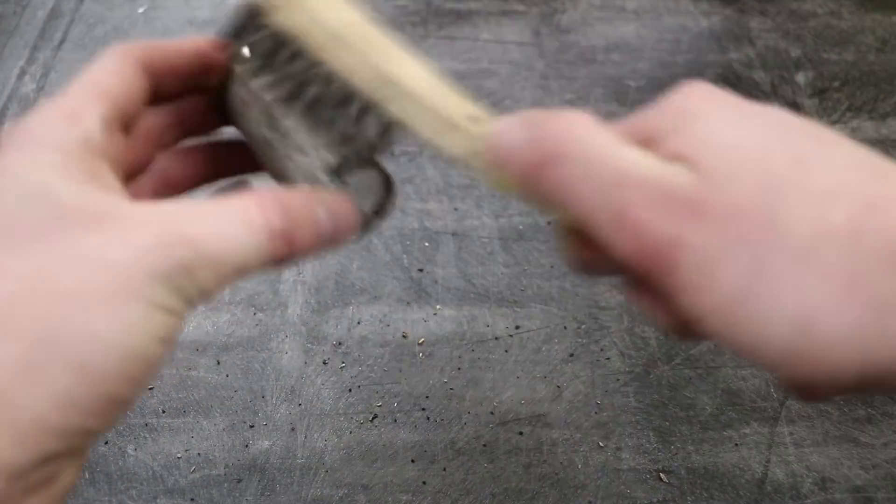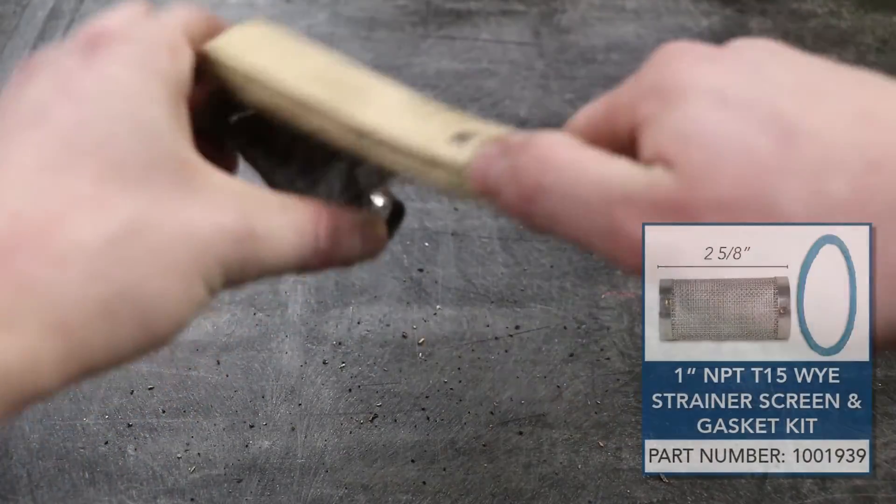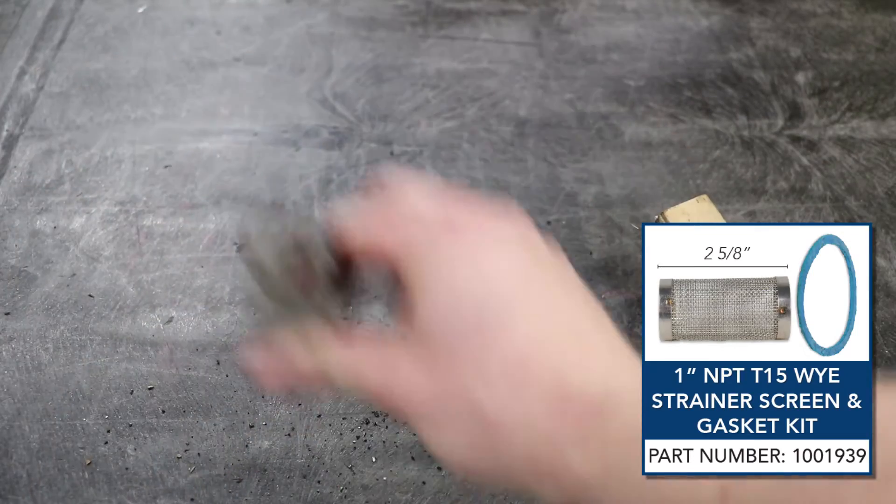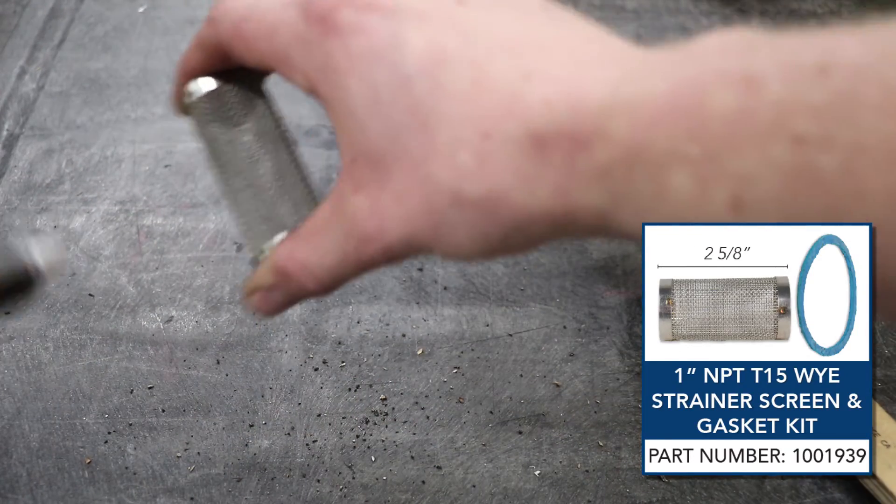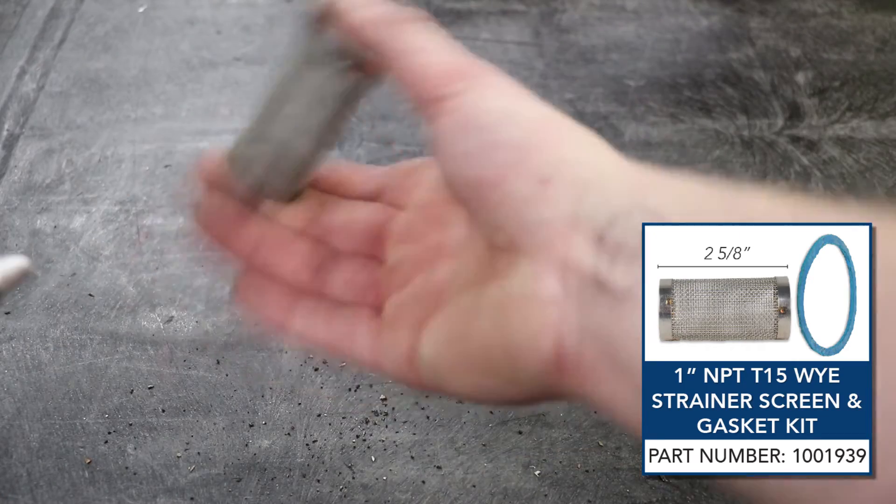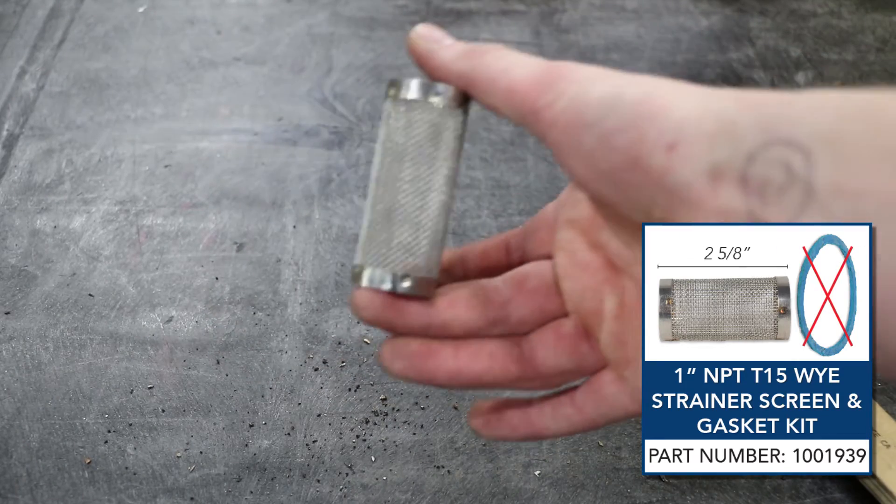If the screen is unable to be cleaned or is damaged in any way a Grundfos Y strainer replacement screen can be ordered through Hydroflex. The new screen will be shipped with a blue gasket that is not needed and you can throw away.